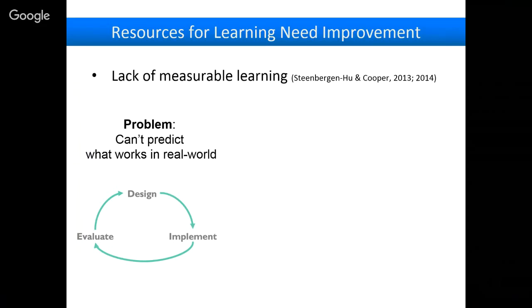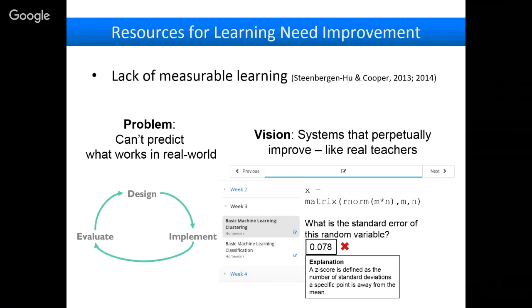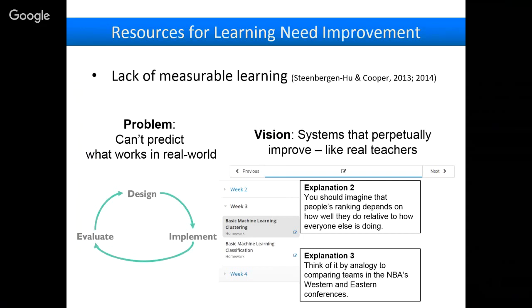Instead of a static math problem or lesson, we should have systems that perpetually improve like real teachers. When you're explaining to someone how to solve a problem, none of us come up with one explanation and say it to a thousand people — every time you speak to someone you organically change how you explain it. Over time you figure out which explanations are better than others, and which explanations work for different people — maybe a simple explanation is good for low-knowledge students and a complex one for high-knowledge students. How do we get systems that can actually do that?